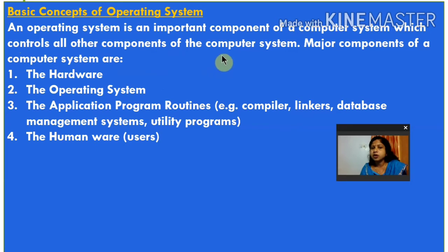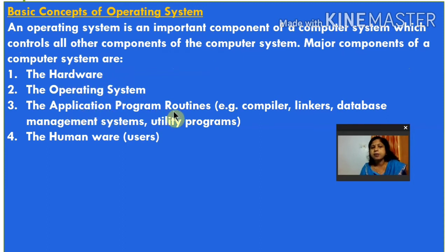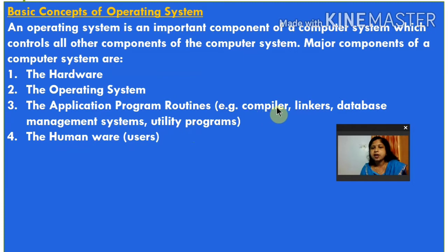The OS controls all other components of the computer system. Major components of a computer system are the hardware, the operating system, the application programs — for example, compiler, linkers, database management systems, utility programs — and the human users. We have already studied about operating system and hardware.